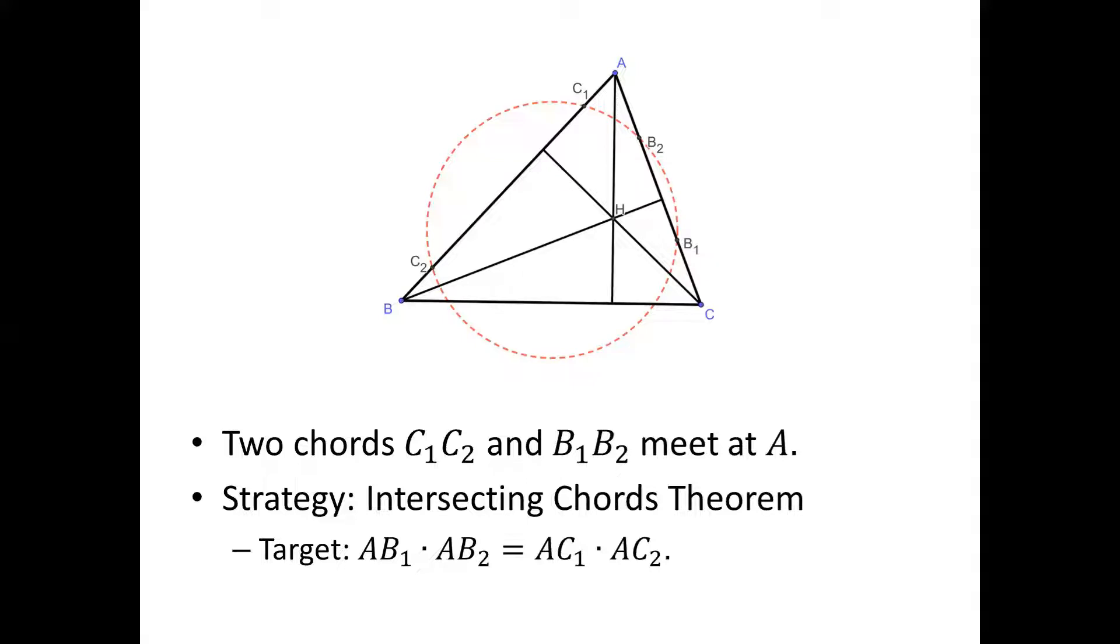Our strategy is to use the intersecting chords theorem. We will prove that AB1 · AB2 = AC1 · AC2. Then, by the inverse of the theorem, these four points are cyclic.